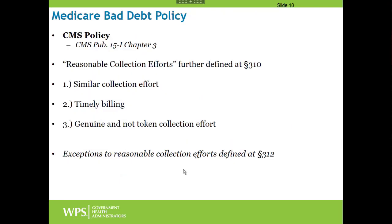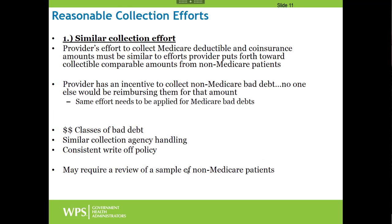CMS Publication 15-1, Chapter 3 implements the regulations. Section 310 details the reasonable collection effort requirements, which break down into three basics: first, similar collection effort; second, timely billing; and third, a genuine and not token collection effort. Exceptions to reasonable collection efforts are defined further at Section 312.